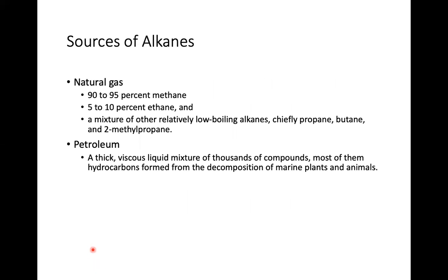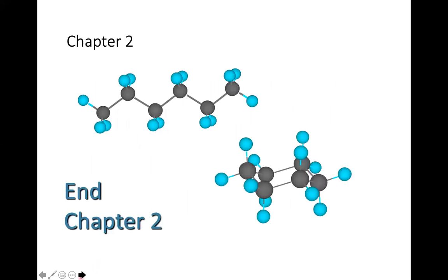Sources of alkanes include natural gas — which contains methane (five to ten percent), ethane, and other relatively low-boiling alkanes like propane, butane, and 2-methylpropane — and petroleum, a thick viscous liquid mixture of thousands of compounds, most of them hydrocarbons, formed from the decomposition of marine animals and plants. That ends our lesson today on alkanes and cycloalkanes.